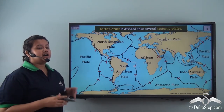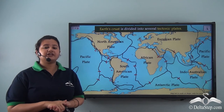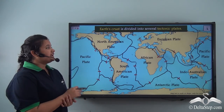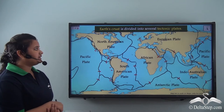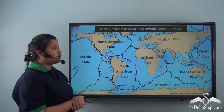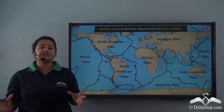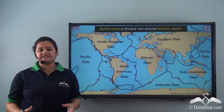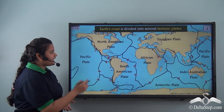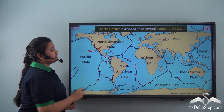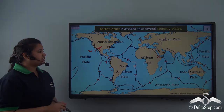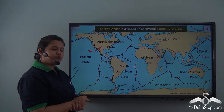Our earth's crust is divided into several major and minor tectonic plates. In this image we can see the major and minor tectonic plates of the earth's crust. These tectonic plates are not static — they are in constant motion. The arrows on this map show the direction in which these tectonic plates move.